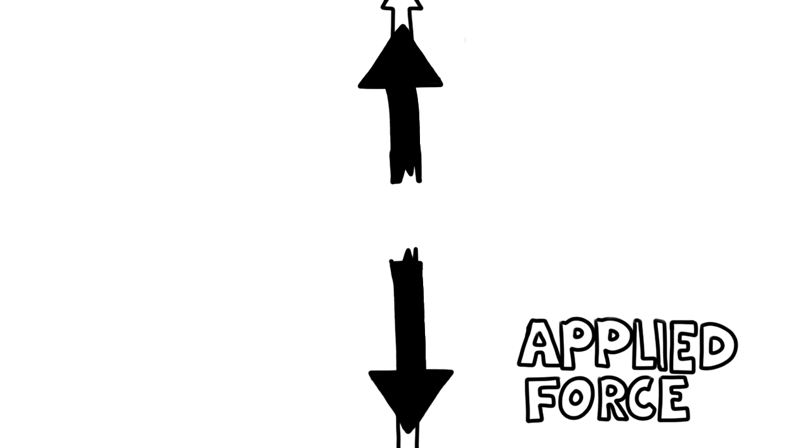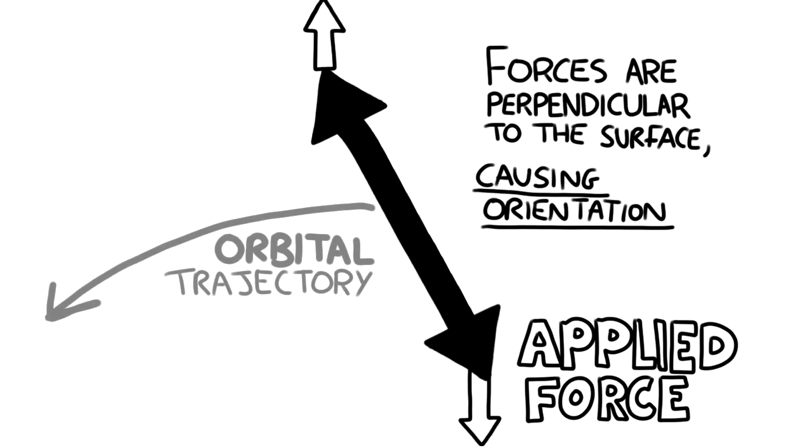To summarize, gravity gradient stabilization is a method of keeping spacecraft oriented in one direction through the extension of craft across sufficiently large range of altitudes. It's effective because it requires no propellant or power to maintain, but is only practical at lower altitude orbits.